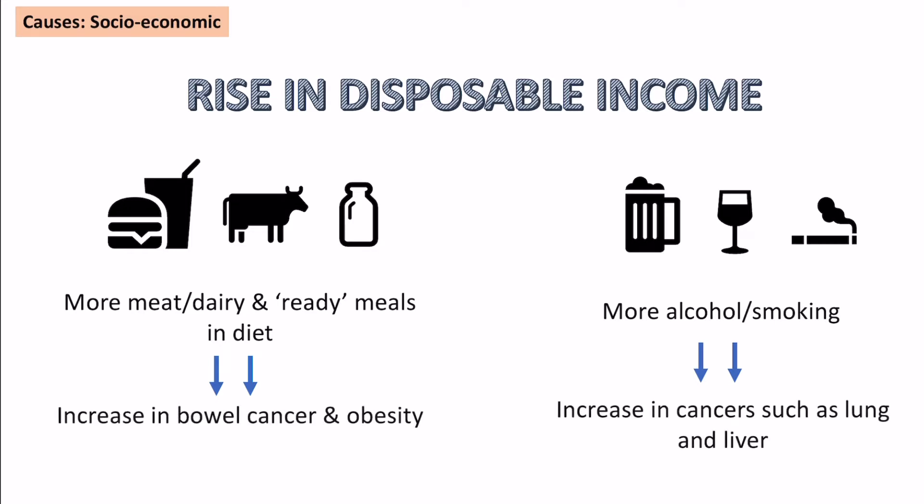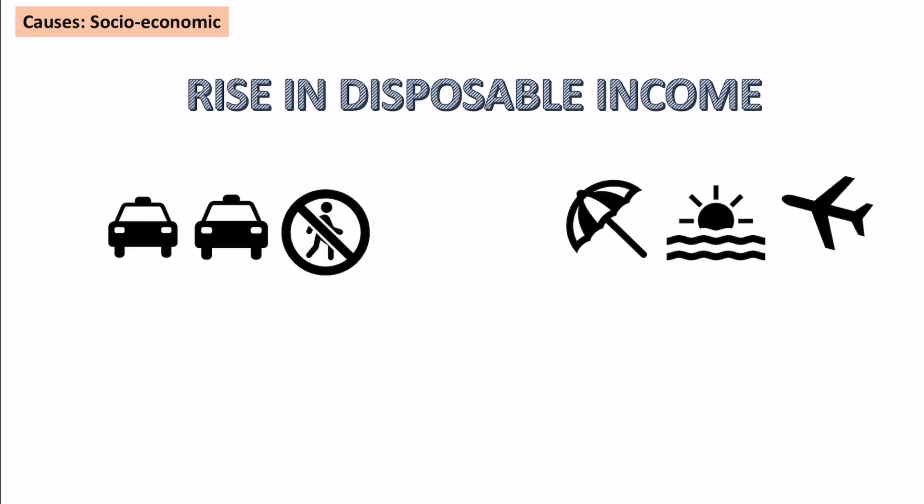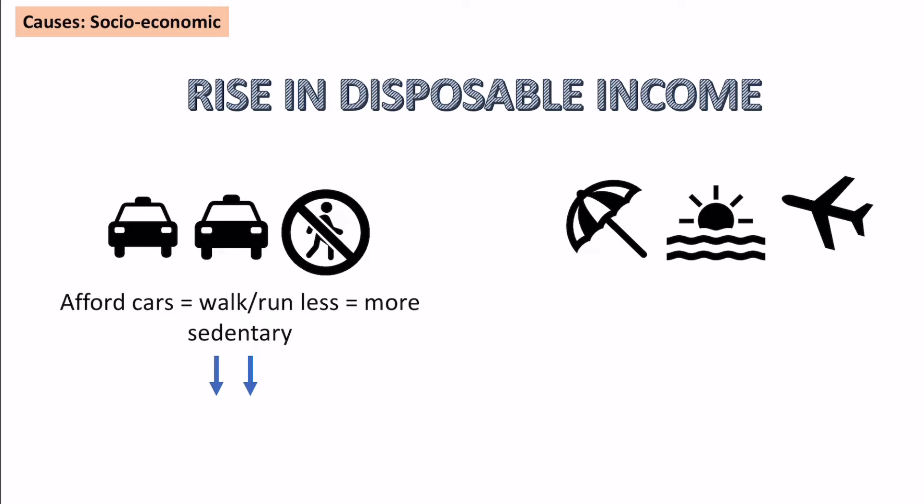Higher disposable income also affects how people live their lives. People can afford a car — maybe two cars — so they're not walking as much as people in lower-income countries, making them more sedentary. This increases the chance of cardiovascular disease and obesity.